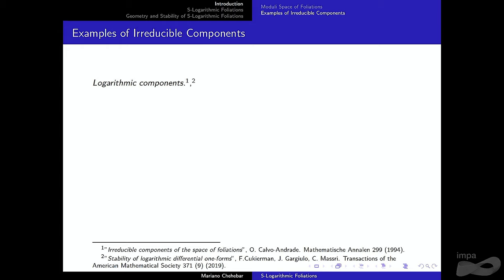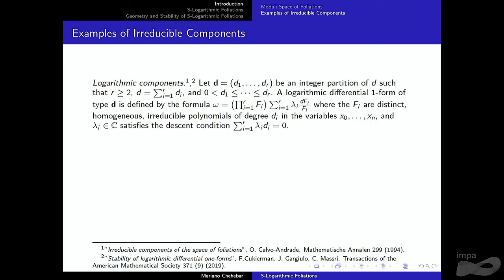A logarithmic foliation is defined by a logarithmic form. We fix an integer partition of a number D — the degree of the differential form, not of the foliation. Using this partition, we pick distinct homogeneous irreducible polynomials of degrees Di. We build a logarithmic form with poles, multiply by the product to eliminate them, and this form naturally satisfies the Frobenius integrability condition, defining a foliation.